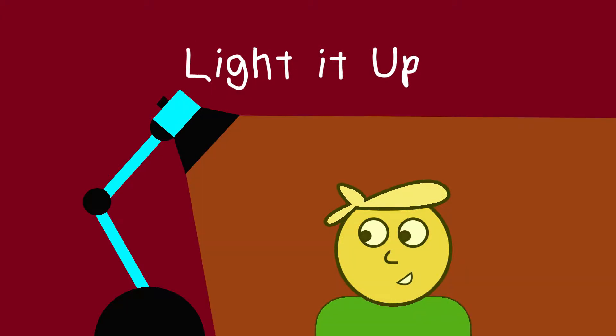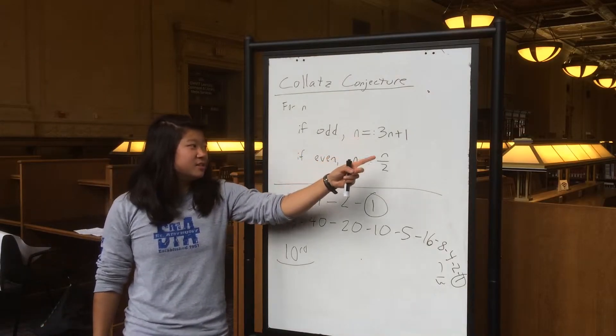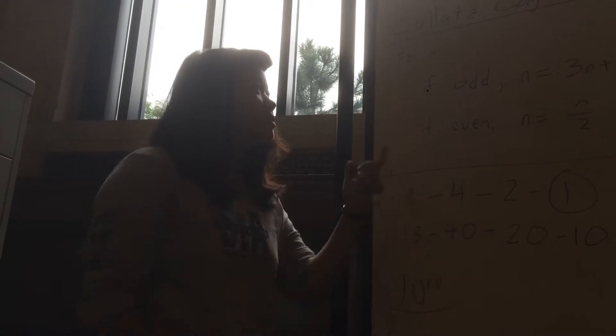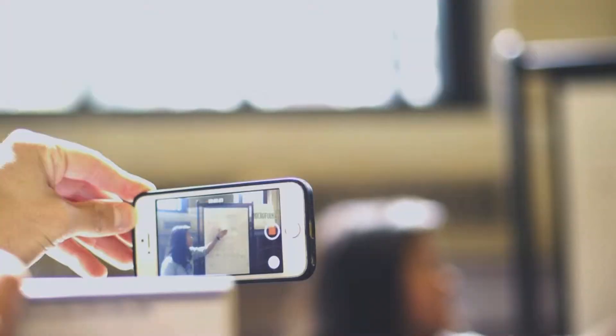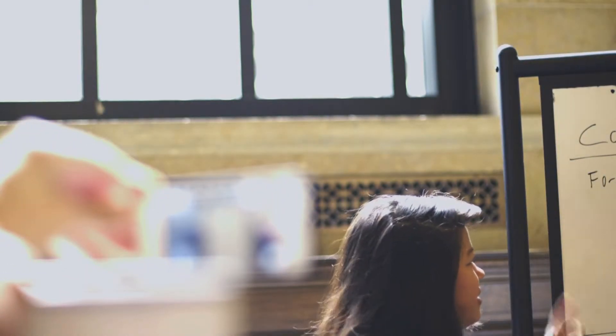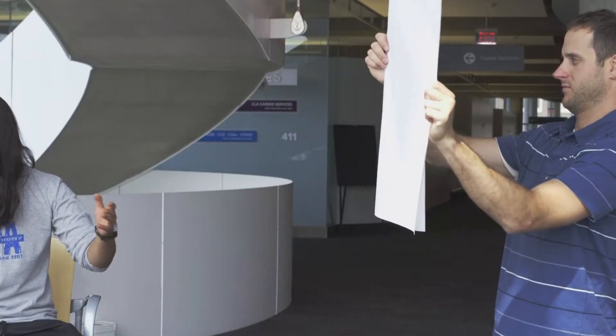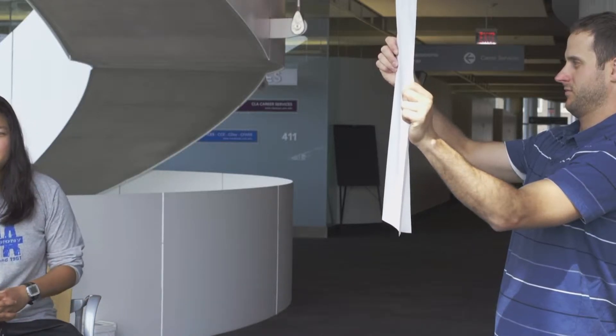Light it up! Make sure your subject is well lit and out of the shadows — it makes for a much better picture. Put the light source, whether it is a lamp or the sun, behind the camera, not behind the person. You don't want your subject to look like they're part of the witness protection program. Use existing light to your advantage. Take off lampshades or use brighter light bulbs if necessary. To even out lighting, try using anything white or reflective to bounce the light and fill your subject.